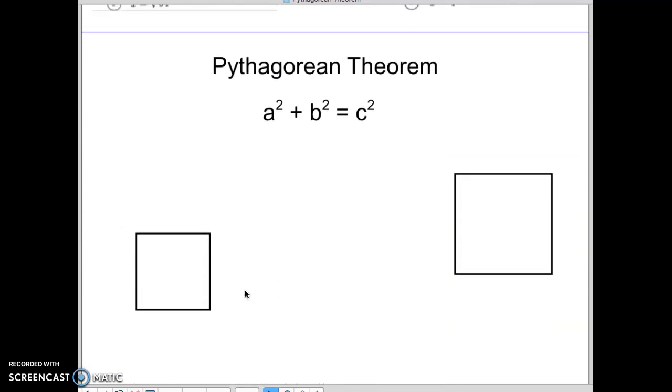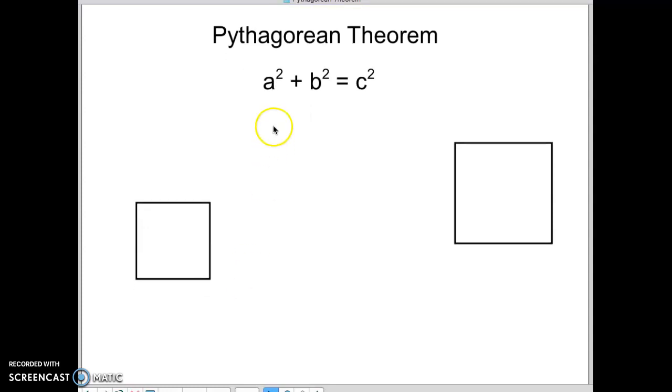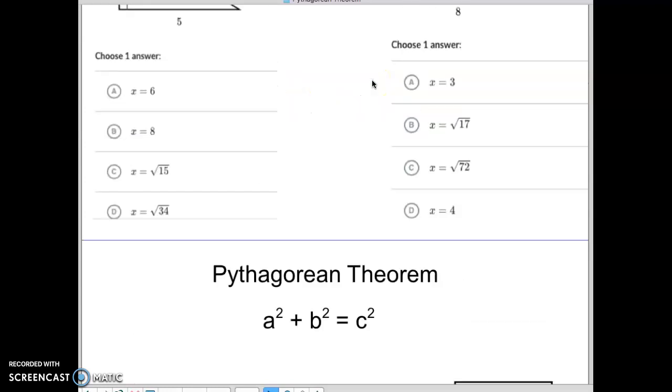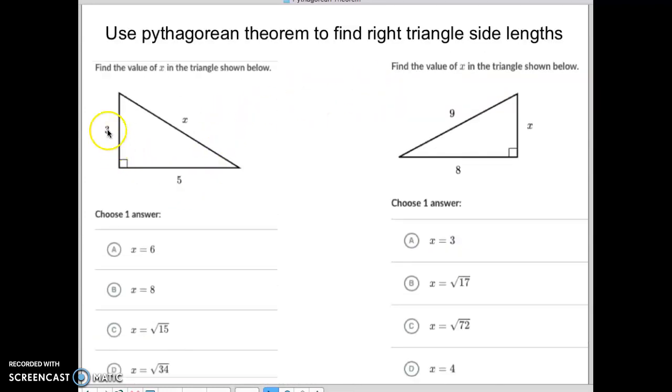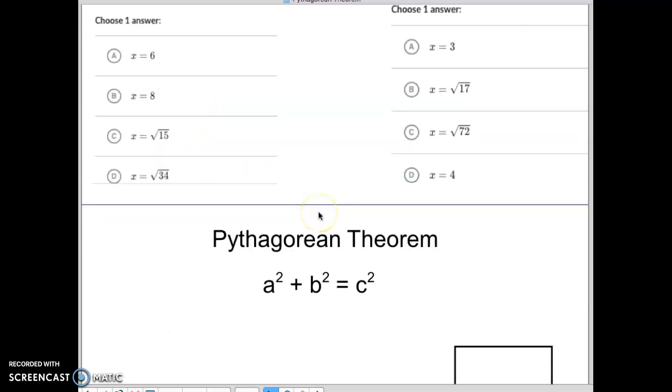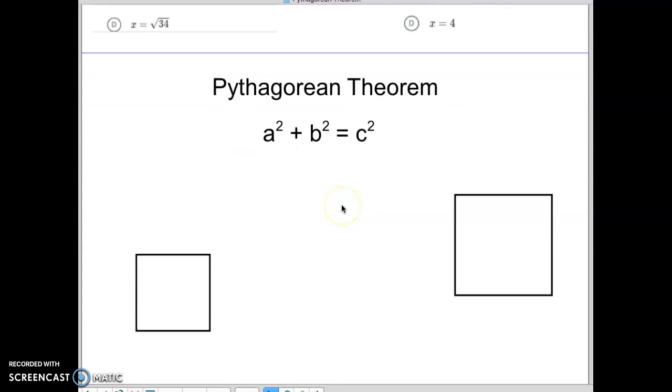So, I'm going to scroll down here, and here is our Pythagorean Theorem. Pythagorean Theorem is A squared plus B squared equals C squared. When it refers to a triangle, it's talking about A squared being attached to the right triangle, B squared being attached to the right triangle, and C squared being opposite of the right triangle. So, this is our Pythagorean Theorem.